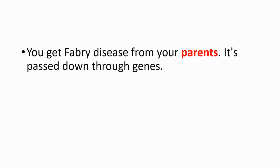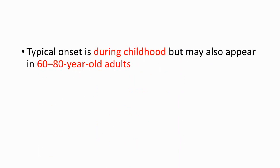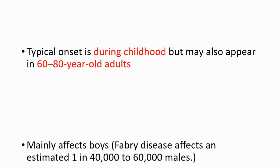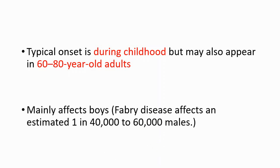You get Fabry disease from your parents — it's passed down through genes. Typical onset is during childhood, but it may also appear in 60 to 80 year old adults, because it has several different subtypes. Some of them start during childhood, some during adulthood. It mainly affects boys, with an estimated 1 in 40,000 to 60,000 males affected.